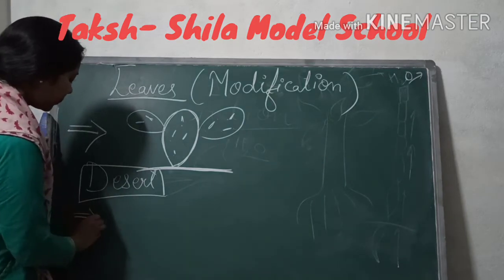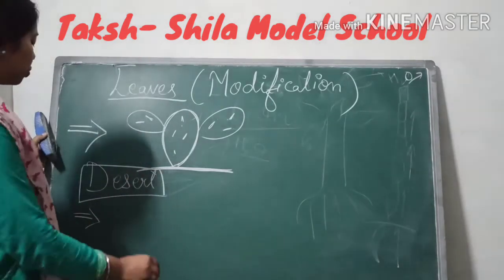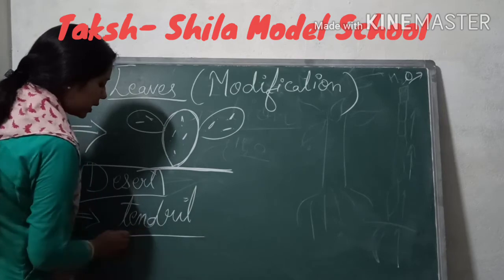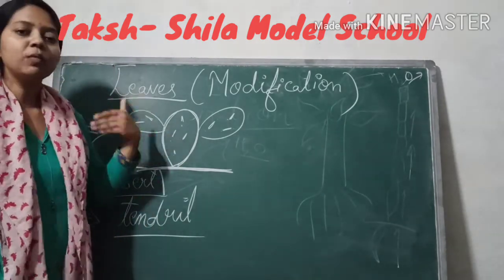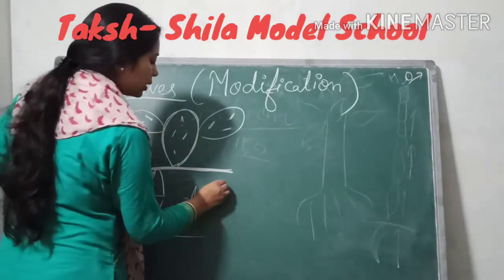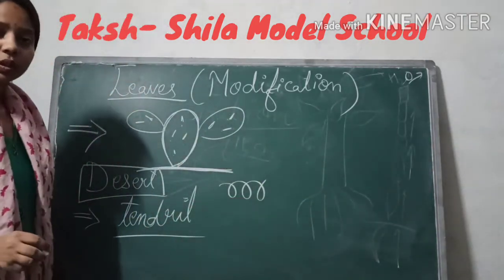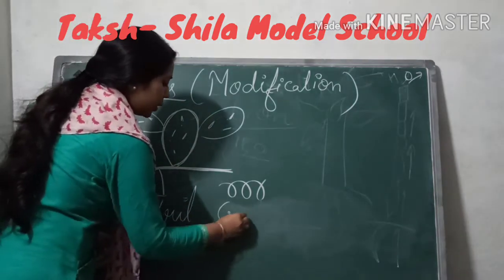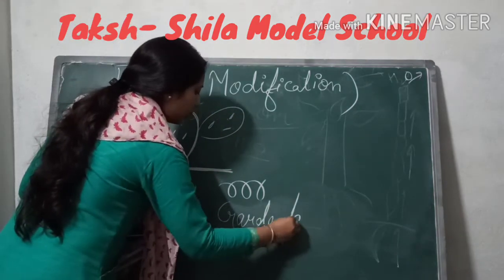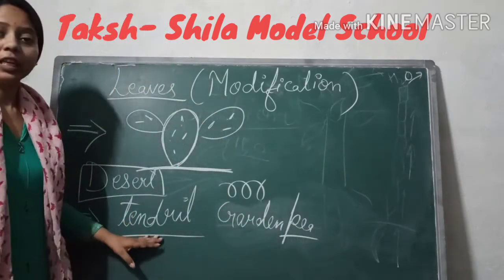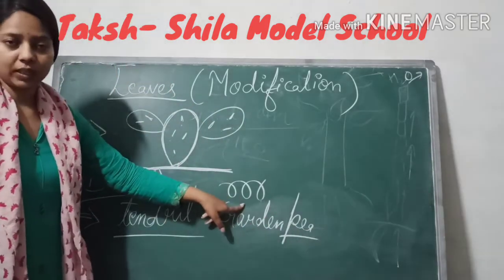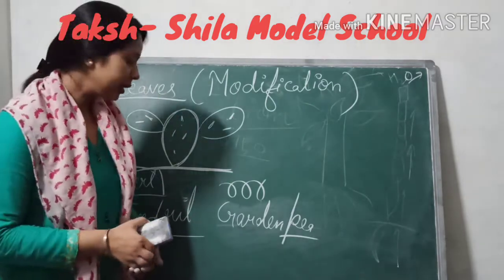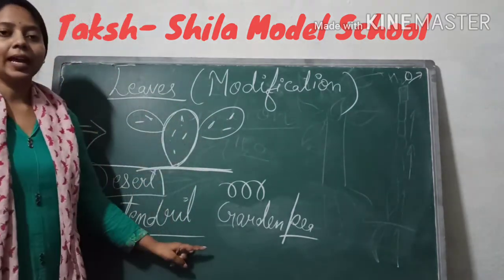Next, leaves are modified into tendrils for support. In many plants, the leaves modify into tendrils. The example of this modification is garden pea — the leaves of garden pea modify into tendrils so that the plant gets support to grow upward.